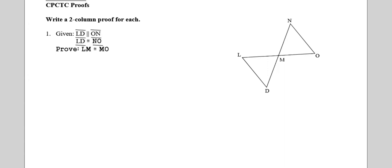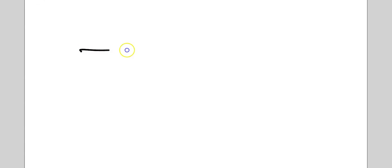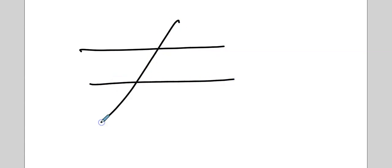So number one, we're given LD is parallel to ON. That's this line and this line, so we put a little triangle to say they're parallel. Please remember, as soon as you see one line is parallel to another, we're talking about what we've been doing already this year — as soon as we see parallel lines, we think transversal, and then we think about our different rules.